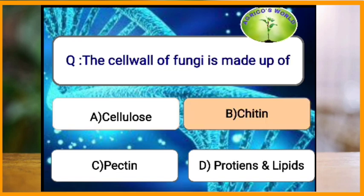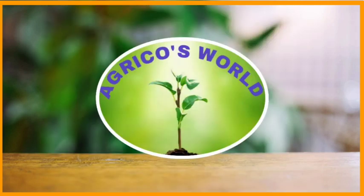The cell wall of fungi is made up of chitin, whereas in Archaea it is made up of protein glycoproteins and polysaccharides, and in eubacteria it is made up of peptidoglycan. During mitosis, chromosomal duplication takes place in which stage? Chromosomal duplication takes place in the S phase of interphase.